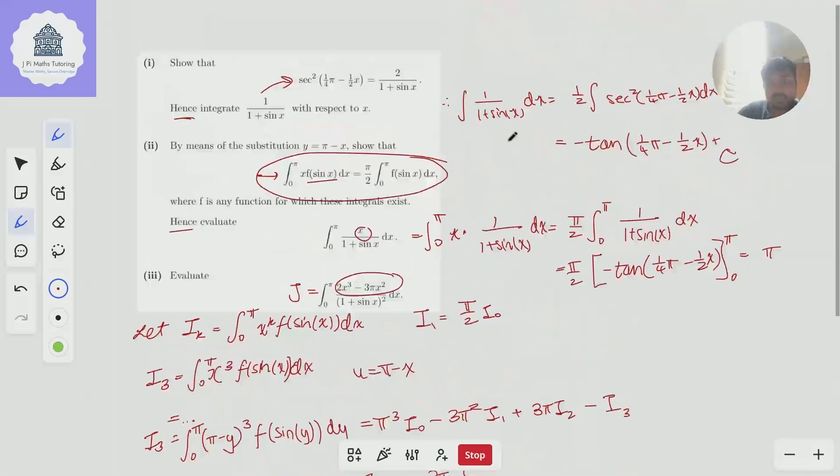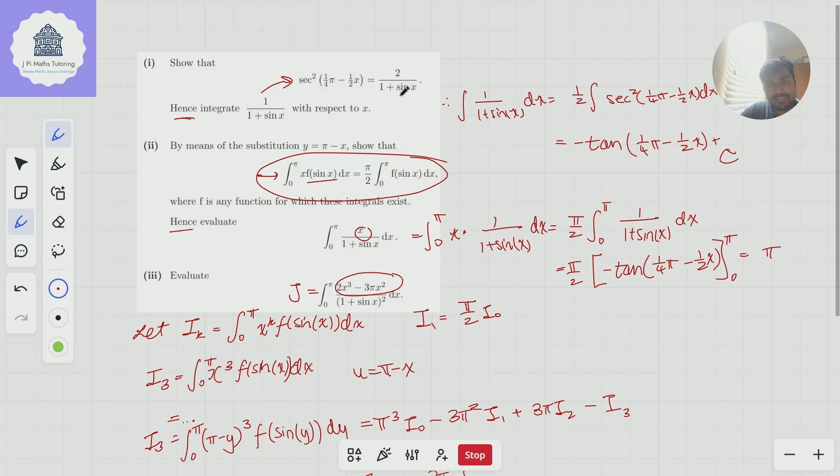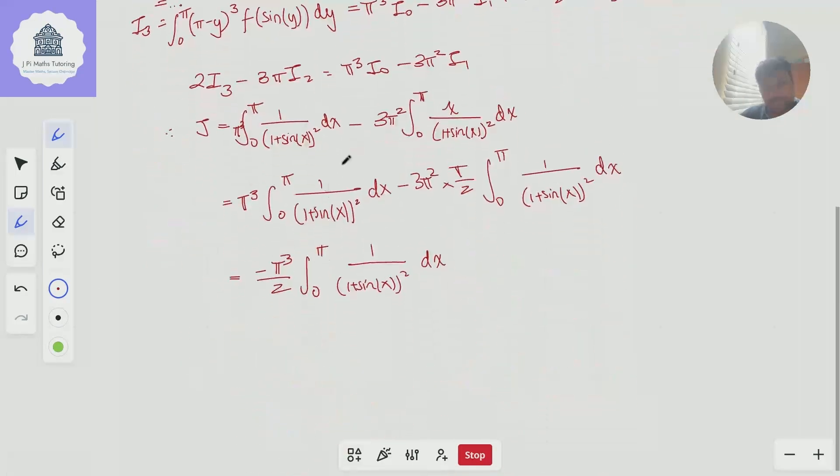Well, the trick is to look back at what we did in part 1. We worked out that 2 over 1 plus sine x is this. So if I just square both sides and divide by 4, I'm going to get 1 over 1 plus sine x squared, and it's going to equal sec to the power of 4 times something divided by 4. And then before I actually dive into writing all that out, I need to think, is that possible to integrate? The answer is yes, because sec to the 4 of u is the same as 1 plus tan squared of u times sec squared of u. And then I can do a substitution involving tan u because the derivative of tan of u is sec squared of u.